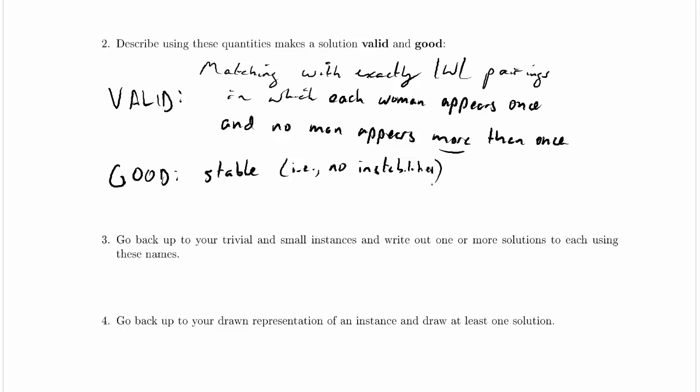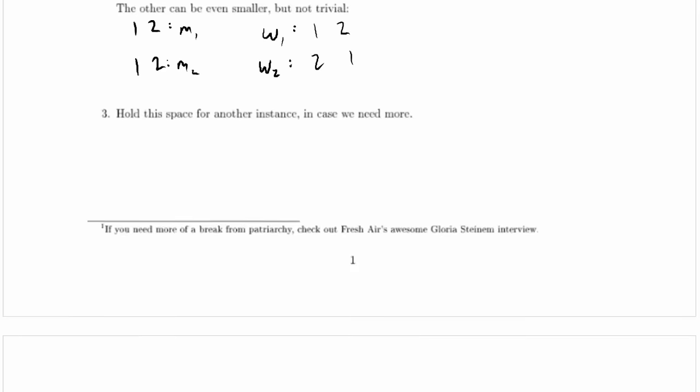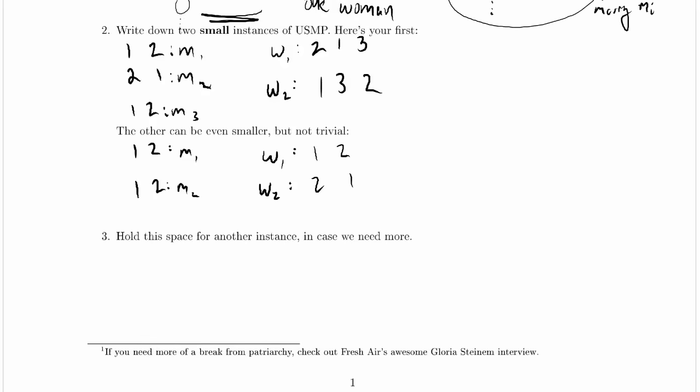And the definition of that may have changed because now we have men who aren't married. Remember, before our definition of instability always involved two people who were already married to other people, not to each other, and who preferred to be married to each other. So let's just try and brainstorm this. And remember, we can always go back to our examples to make this a little clearer. In fact, let's go back to our example and let's see if we can manufacture a matching that's unstable and it's unstable somehow because of a man with no partner.